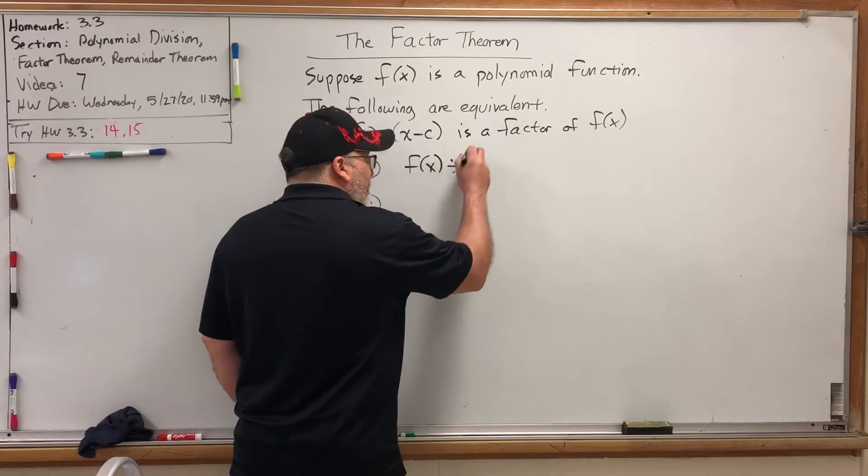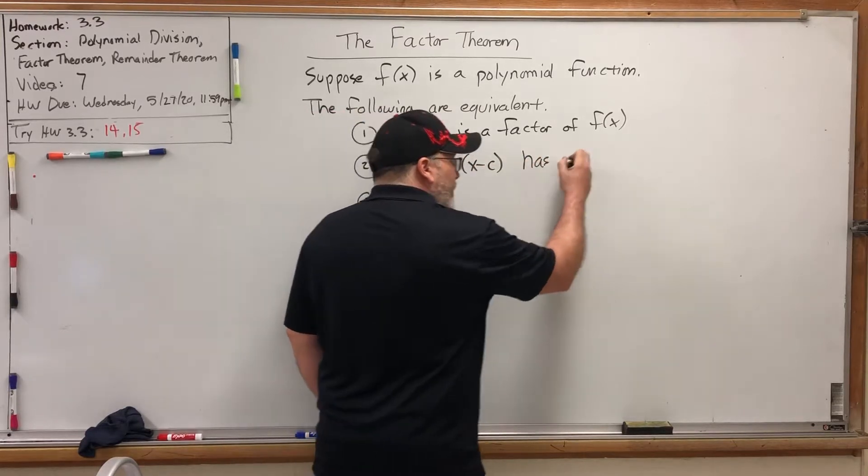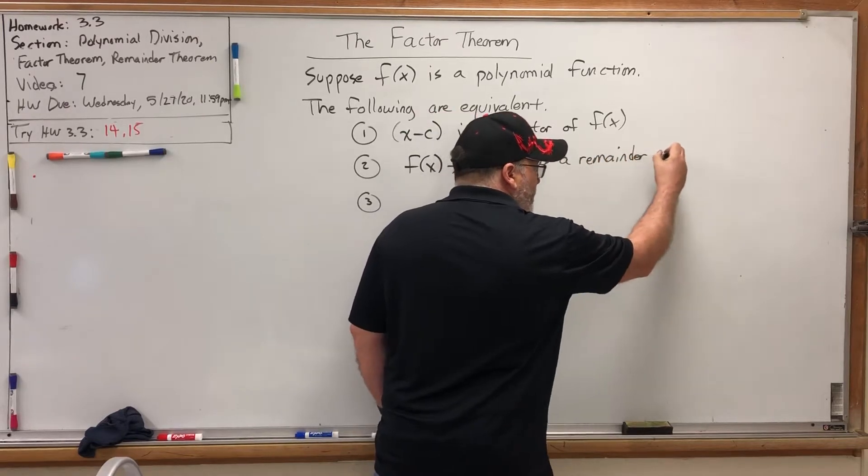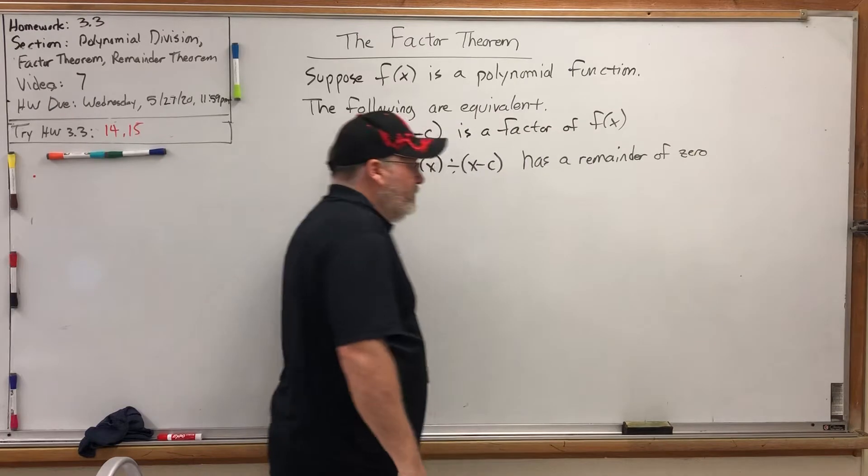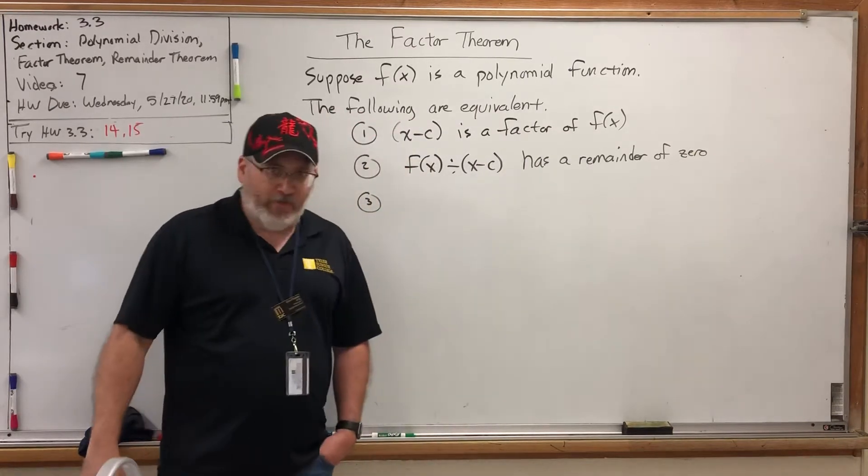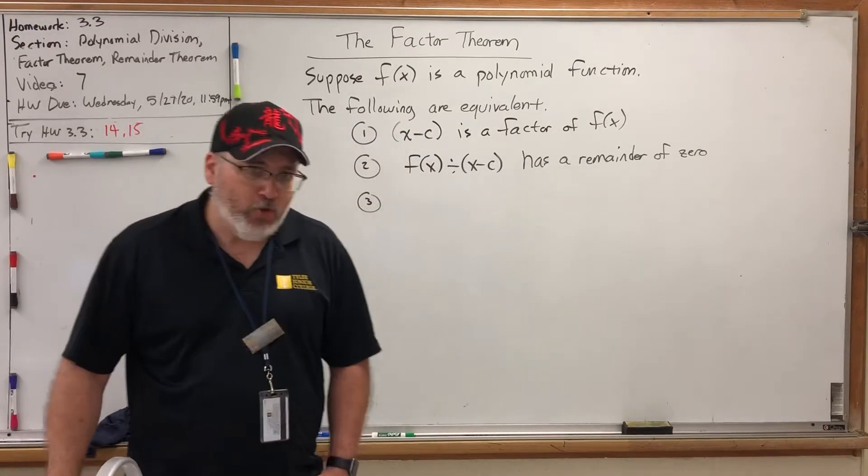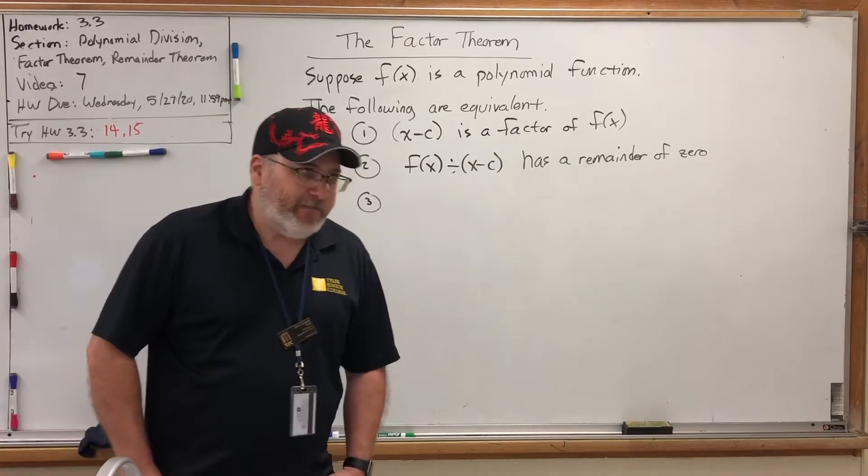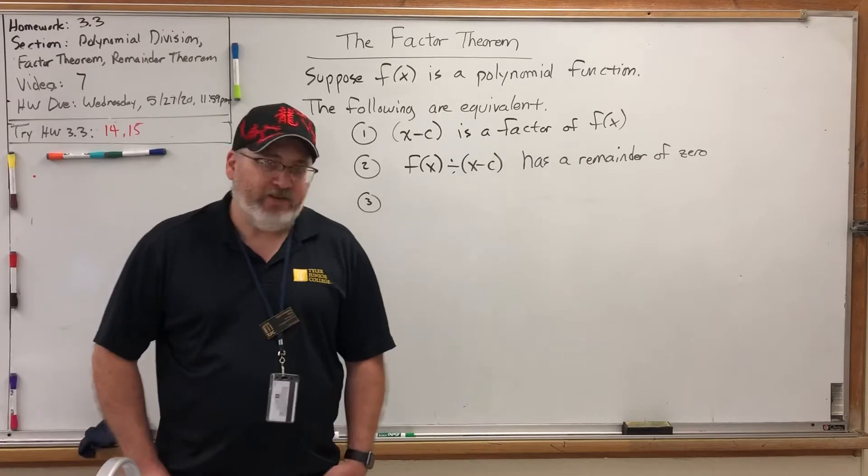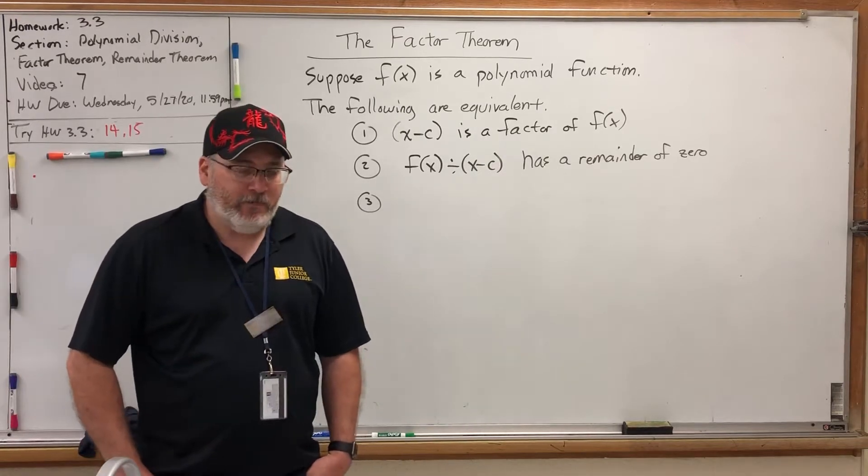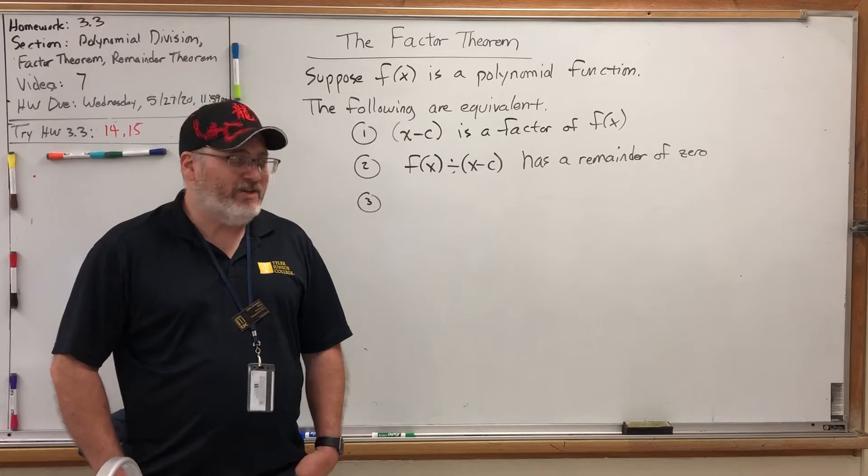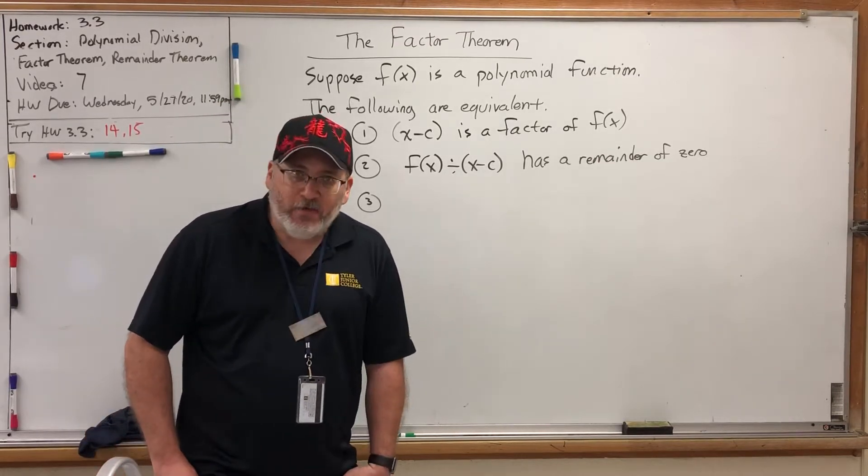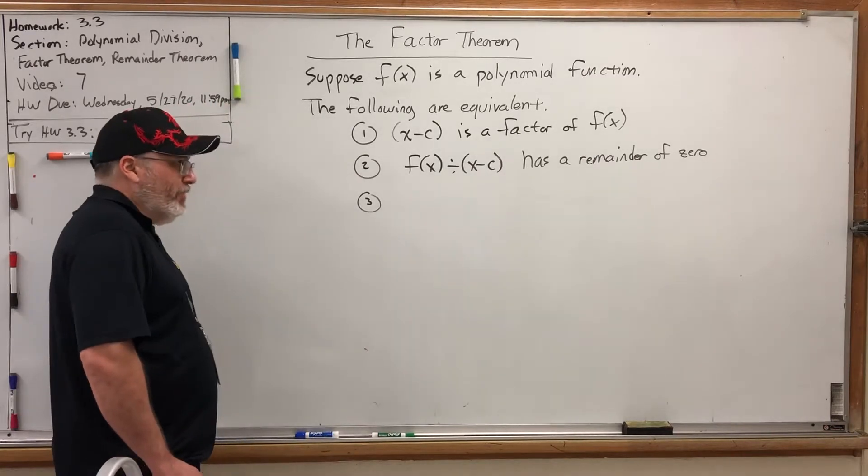Statement number two, F(x) divided by (x-c) has a remainder of zero. That kind of makes sense, because if you're a factor of something, then when I divide by you, it should divide evenly without a remainder. Eight is a factor of 40, because 40 divided by 8 is exactly 5, with a remainder of zero. So what's the third part of this equivalency?